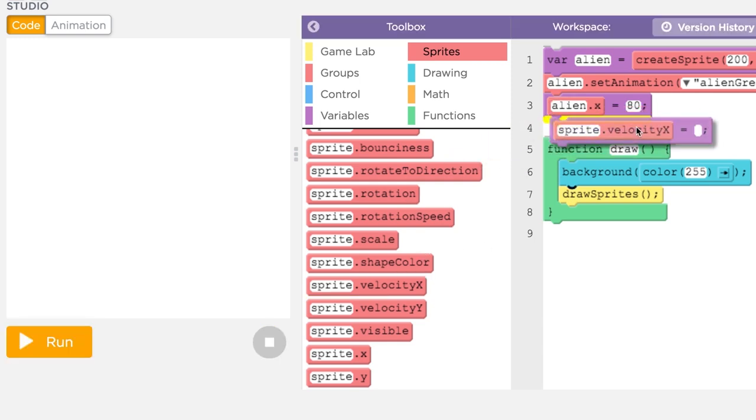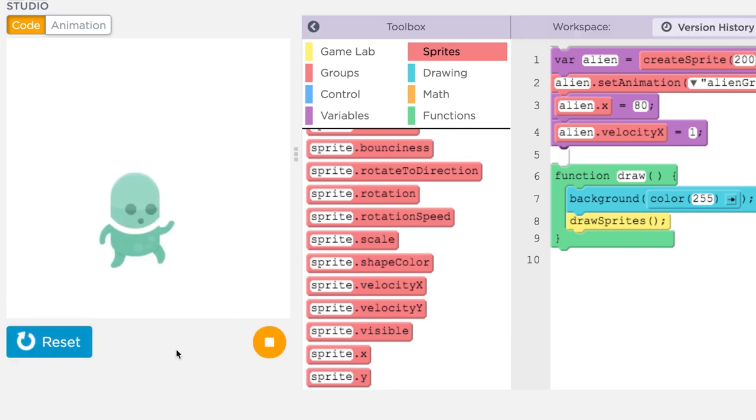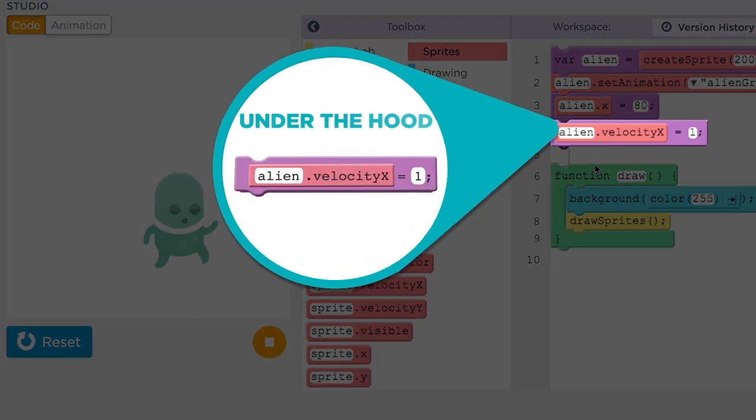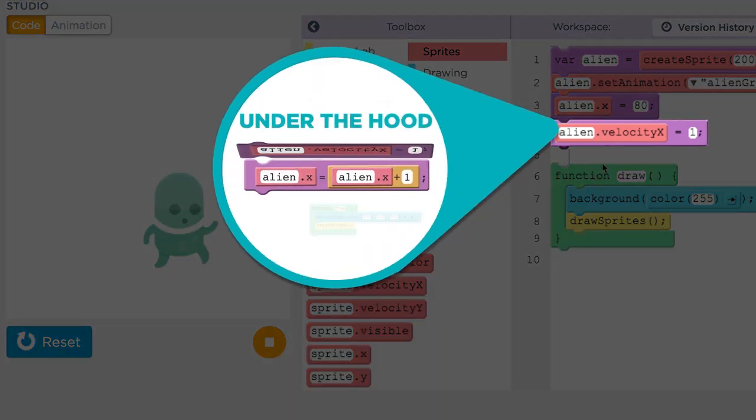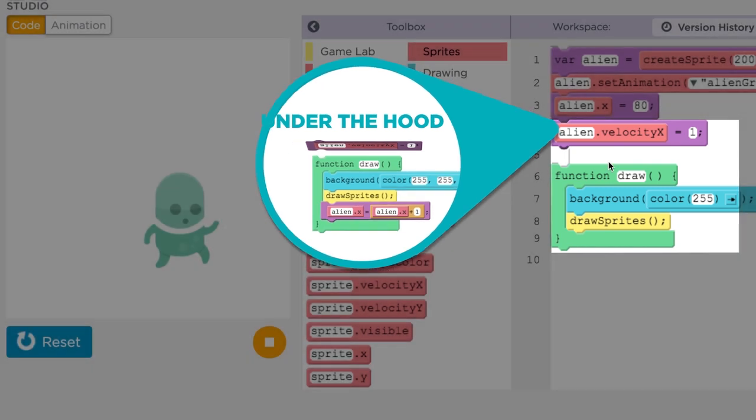Now let's give that sprite a velocity by setting its velocity X property to 1, just once, at the beginning of the program. When we rerun the program we see that the sprite's position is updated. Under the hood the velocity X property and the counter pattern are used to update the sprite's position, moving it across the screen.